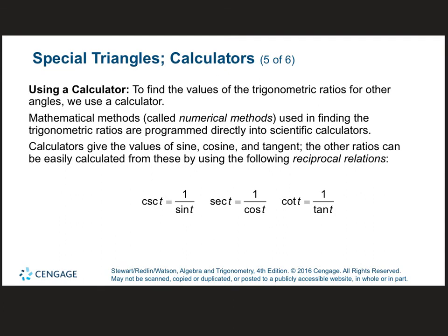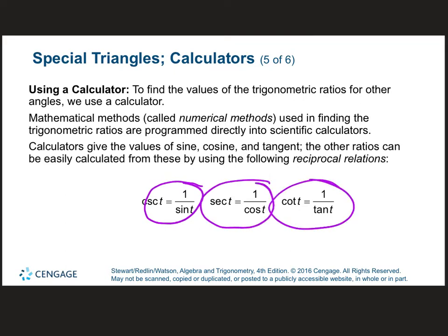Using your calculators: if you're asked to find the sine, cosine, or tangent of an angle, they give you the degree, and you can literally hit sine 20, cosine 47, whatever. But if they're asking for reciprocal functions — cosecant, secant, or cotangent — you have to put 1 over sine, 1 over cosine, or 1 over tangent respectively.